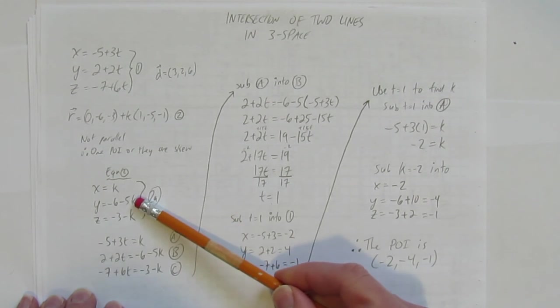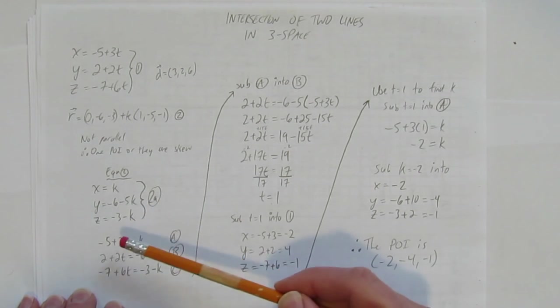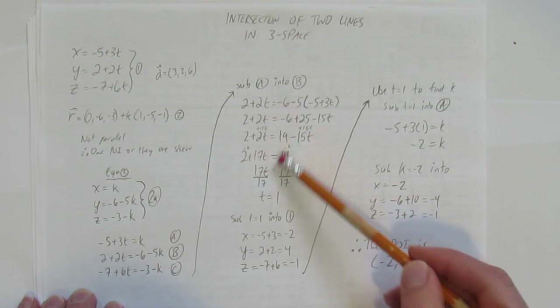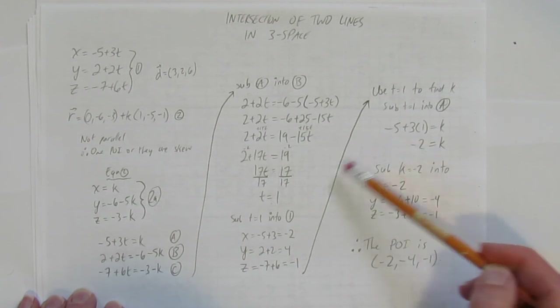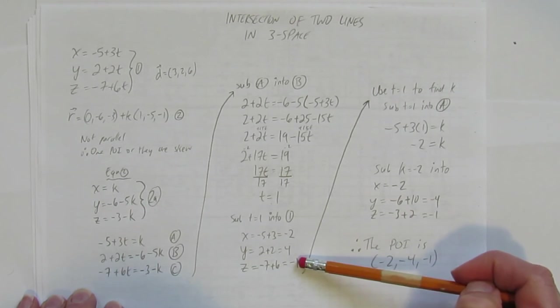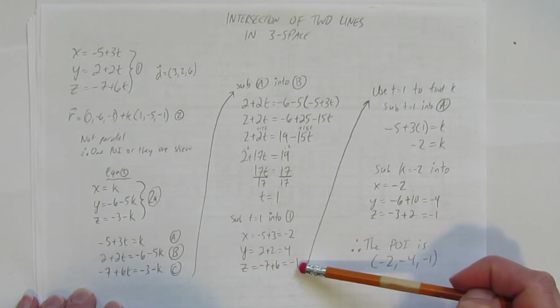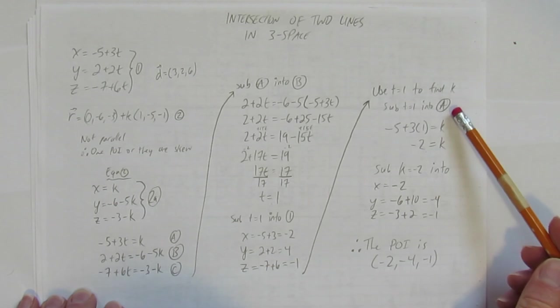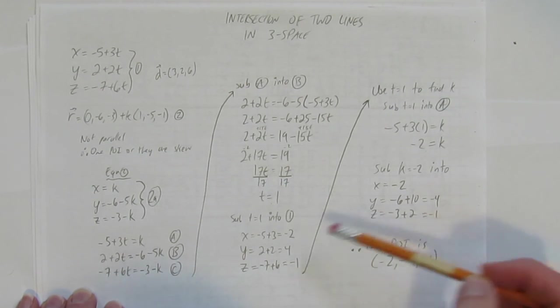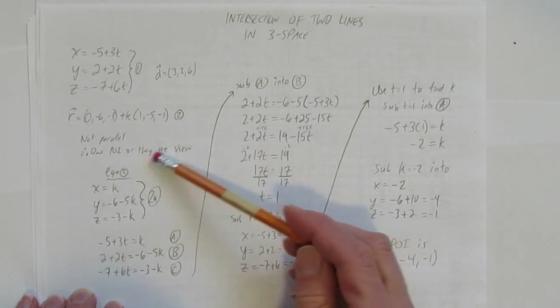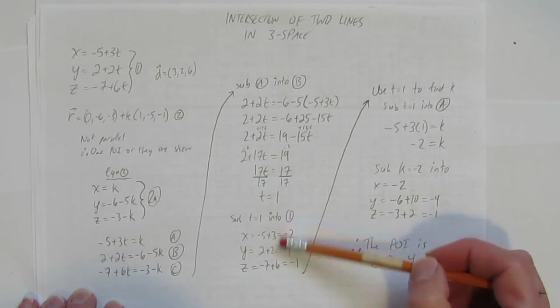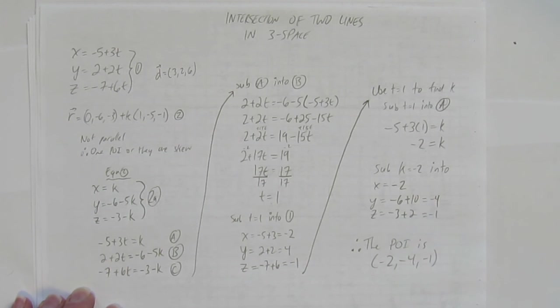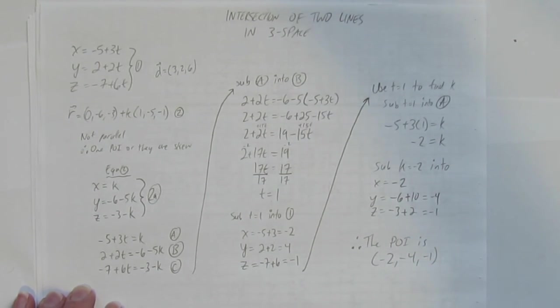So we made them both parametric equations, and then set them both equal, and solve for t. We also used t to solve for k, and we compared what point do I get when I use t equals 1, the t we solve for, and what point do I get when I use the k value I solve for. I better get the same point. If I didn't, they'd be skew. But in fact, when I solve for t and solve for k, I got the exact same point, which means there's a point of intersection at negative 2, negative 4, negative 1.